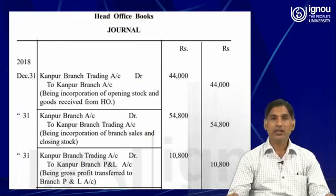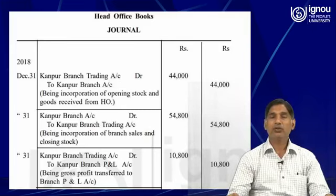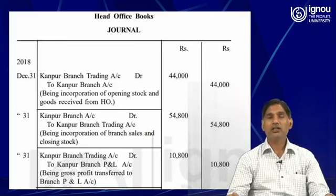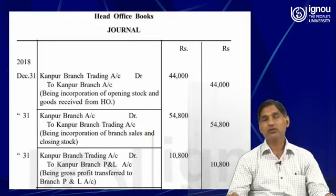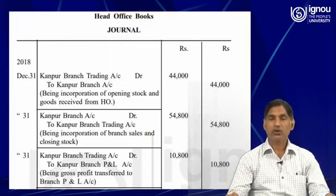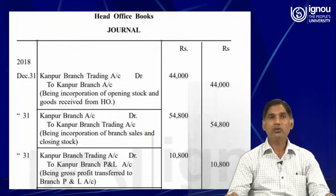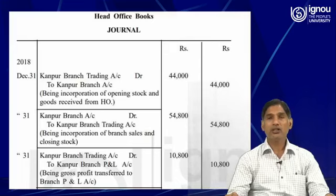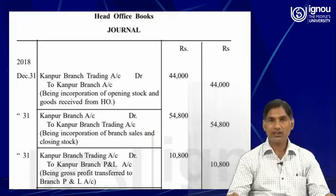Now, there are few items which are to be recorded in the debit side of the profit and loss account, and there are some items which need to be recorded in the credit side of the profit and loss account. Again, the items which need to be recorded in the debit side of the profit and loss account — for those transactions,